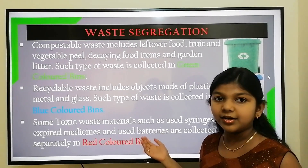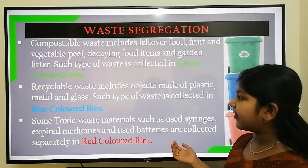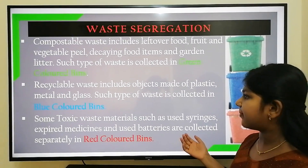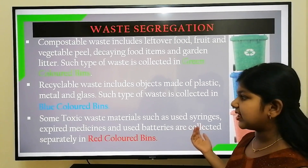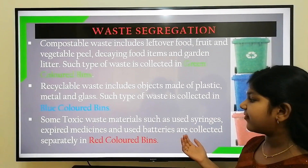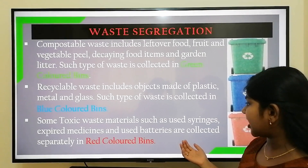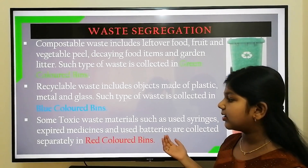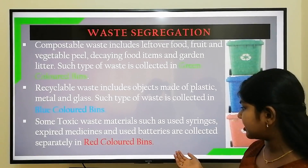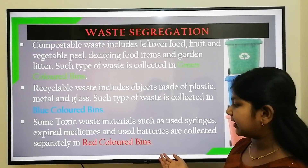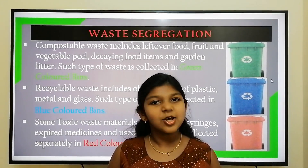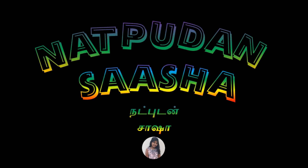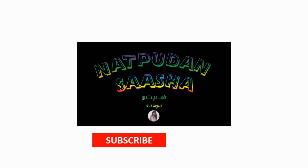Recyclable waste includes objects made from plastic, metal, and glass. Such types of waste are collected in blue colored bins. Some toxic waste materials such as used syringes, expired medicines, and used batteries are collected separately in red colored bins. The red colored bins are usually kept near hospitals.